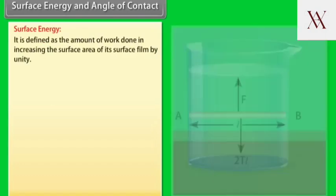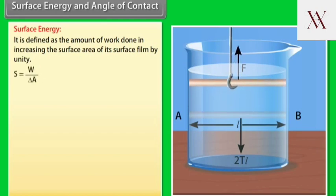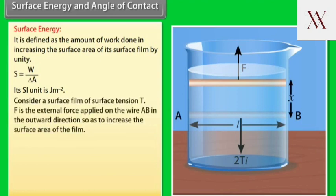Surface energy and angle of contact. Surface energy is defined as the amount of work done in increasing the surface area of its surface film by unity. Surface energy equals work done divided by increase in area. Its SI unit is joule per meter square.